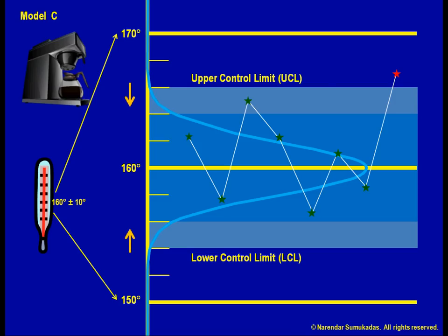However, if the control limits are too close to the mean, such as with 2 sigma limits, we could be running in circles chasing false alarms.